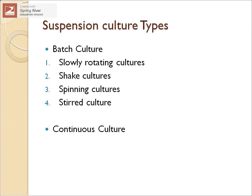Continuous culture involves a continuous inflow of medium and continuous exit of cells, allowing you to maintain cells in one particular stage of the growth phase. In batch culture, cells pass through the entire growth curve, whereas in continuous culture you can maintain cells in the lag, exponential, or stationary phase depending on what metabolite you want. Under continuous culture there are two types: chemostat and turbidostat, the details of which will be studied in the fifth unit.